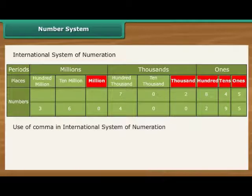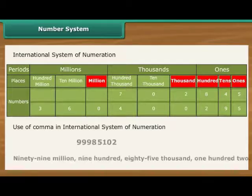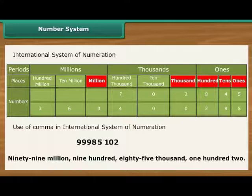Commas are used to mark thousands and millions. It comes after every three digits from the right. The first comma marks thousands and the next comma marks millions.